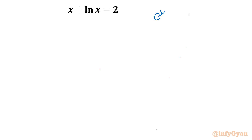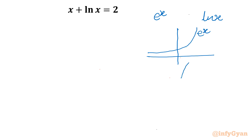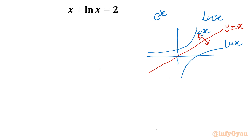I will consider two functions — e to the power x and ln x — to understand Lambert W better. If I plot them, this is our e raised to the power x, and this is our ln x. If I put the line y equal to x in between and take the mirror image with respect to it, you get the e^x and ln x graphs as symmetrical, reflected graphs — mirror images of each other.